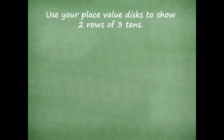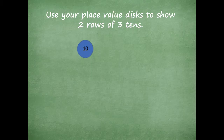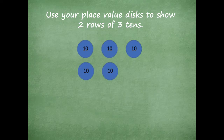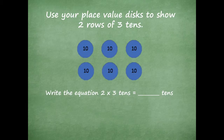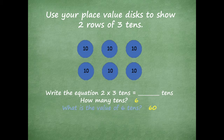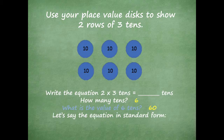Now we're going to use our place value disk to show two rows of three tens. This time, instead of having a 1 in each place value disk, we're going to use ten place value disks. There's my first row of three tens and my second row of three tens. The equation is two times three tens equals how many tens? Six tens. The value of six tens is 60, so in standard form: two times thirty equals sixty, because three tens is really just thirty.